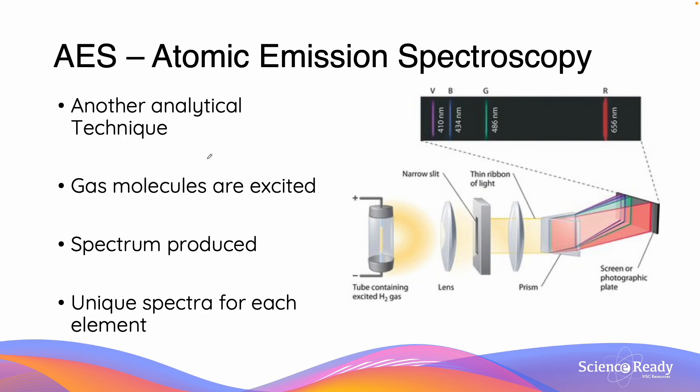AES, also known as atomic emission spectroscopy, is another analytical technique whereby we create things called spectra in order to identify gas molecules. The principle of this is that we excite electrons in an example of gas through heating. So in this diagram we have a hydrogen gas tube which produces light. This light is then passed through a lens to magnify it, passed through a narrow slit, and then refracted through a prism to split the light into its multiple different wavelengths.